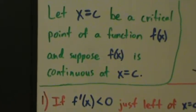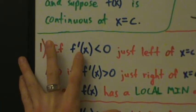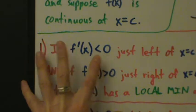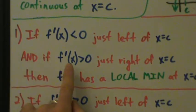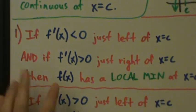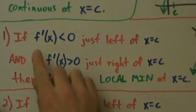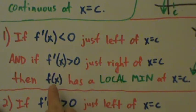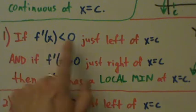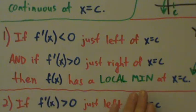So we have a critical point and the function is continuous there. If the derivative f prime of x is negative just left of the critical point x equals c, and the derivative is positive just to the right of x equals c, then f of x has a local min at x equals c. Why? Because negative derivative means decreasing function, and positive derivative means increasing function. So if the function decreases just to the left of c and increases just to the right of c, then the function has a local min at c.